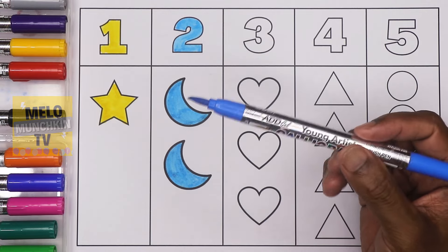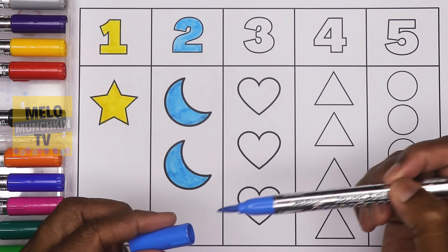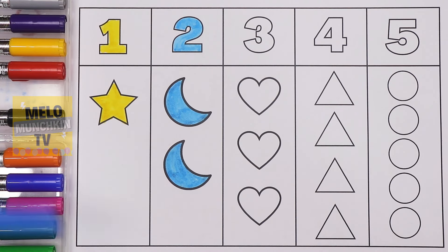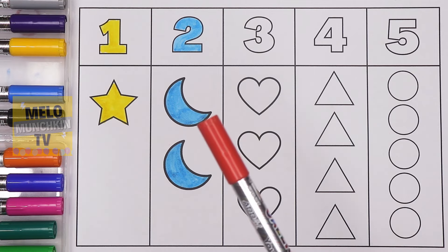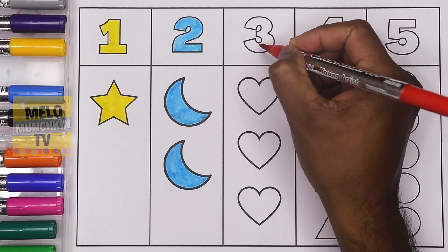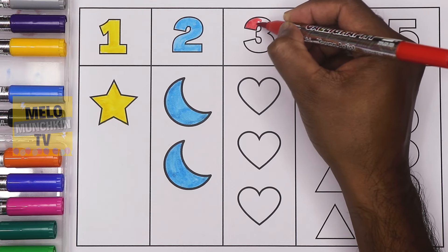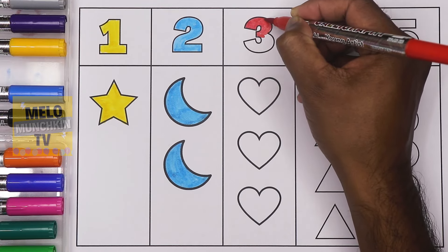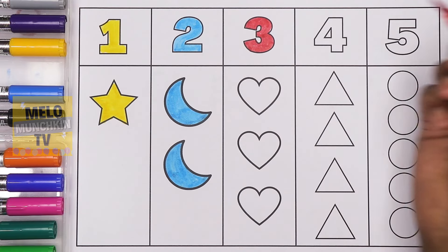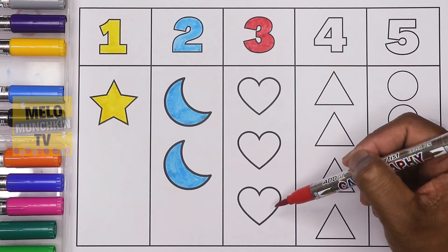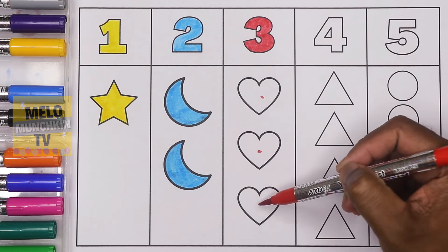Two crescents — one and two. Next, I'll take red color. And color number three, this is number three. These are hearts — how many hearts? One, two, and three.